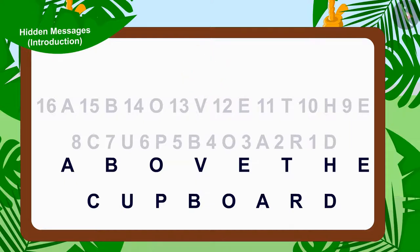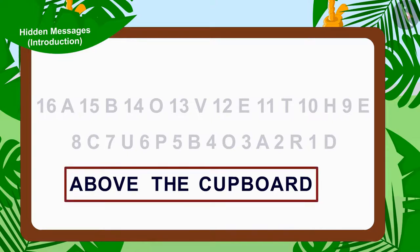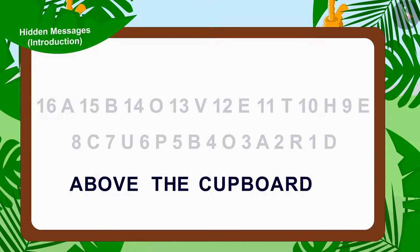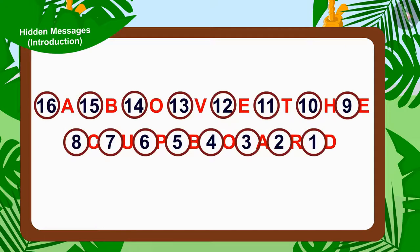Yes, the hidden message here is about the cupboard. Children, this too is a hidden message made from alphabets. Here, in this hidden message, Appu has hidden the alphabets in between the numbers in such a way that there is one alphabet written after every number.